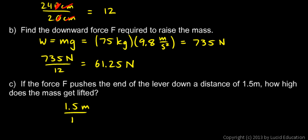We simply do 1.5 meters divided by 12, and that comes out to 0.125 meters. And if you want, it might be a little more understandable to write it in centimeters: 12.5 centimeters.